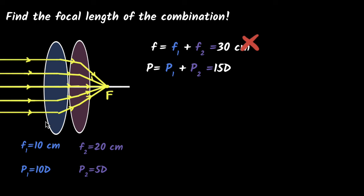So I now found the total power of this system. But you might say, well, but I don't want total power. I want to find the total focal length, but we know how to do that. If I know the power, I can find the focal length by using the same formula. So yeah, power is one by f. They should also be applicable for the total power over here.